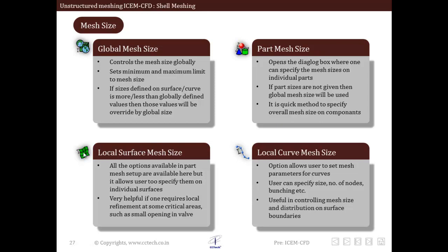The next option is local surface mesh size. This is similar to part mesh size but it applies to surfaces — we can specify the mesh size on individual surfaces. It is very useful when local refinement is required in some areas such as valve openings and other gaps. Curve mesh sizes are also available, where we can specify the mesh parameters for curves — the number of nodes, bunching, etc. — to control mesh size and distribution on surface boundaries.